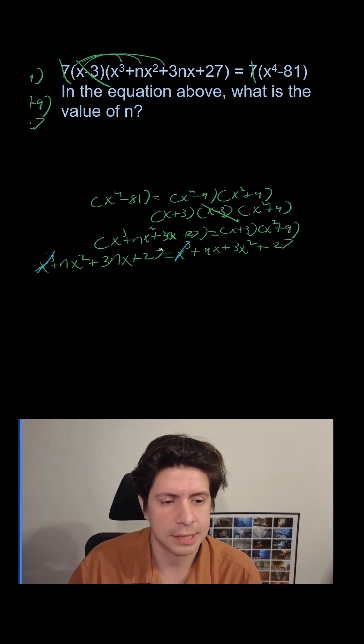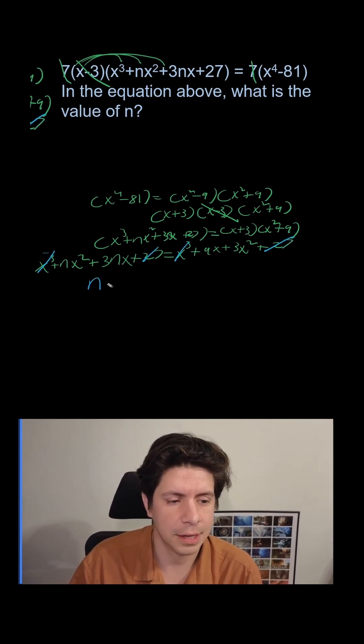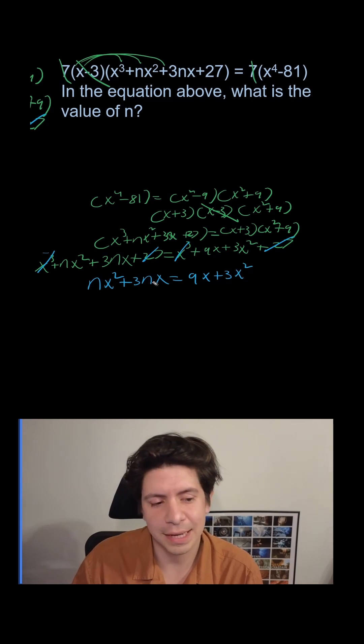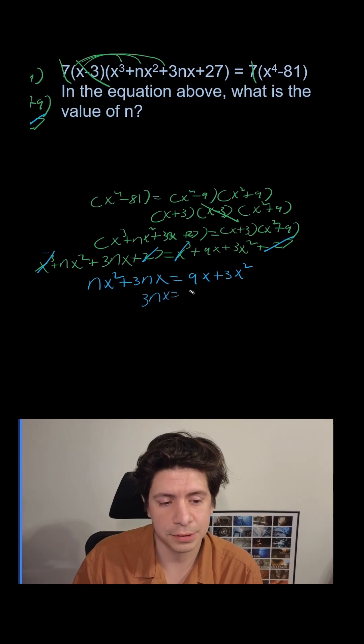x³s cancel. 27s cancel. So we're left with nx² + 3nx = 9x + 3x². So what number does n have to be? We could just say 3nx = 9x and n = 3.